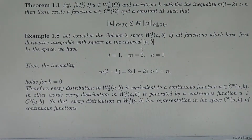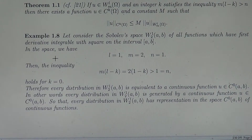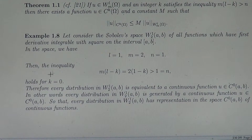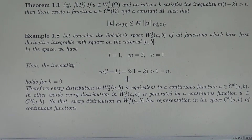Example: Consider the Sobolev space W^{1,2} on the interval (a,b) of all functions having first derivative integrable with square on (a,b). In this space we have L equals 1, M equals 2, and N equals 1 since we are in the one-dimensional case. Then the inequality in the theorem, M times (L minus K) greater than N, becomes 2 times (1 minus K) greater than 1, which holds when K equals 0 but not for K equals 1.